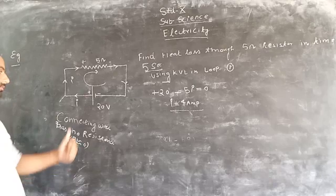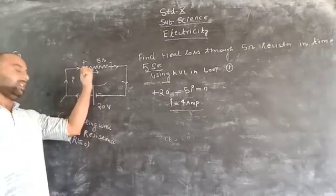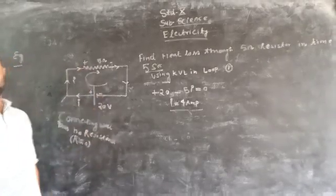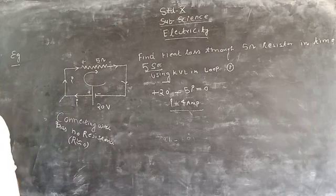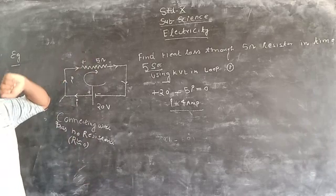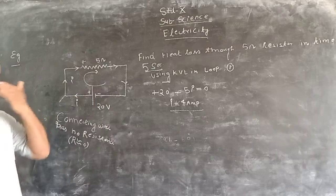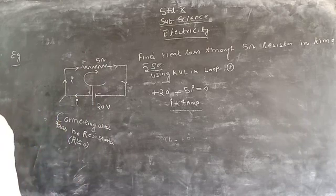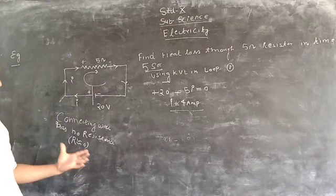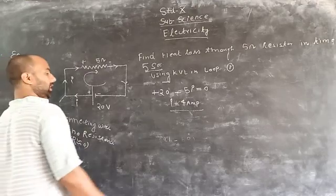It means from here to here there is no loss of energy and no loss of heat in the connecting wires. From here to here there is also no loss of energy, but heat loss occurs in the resistor.